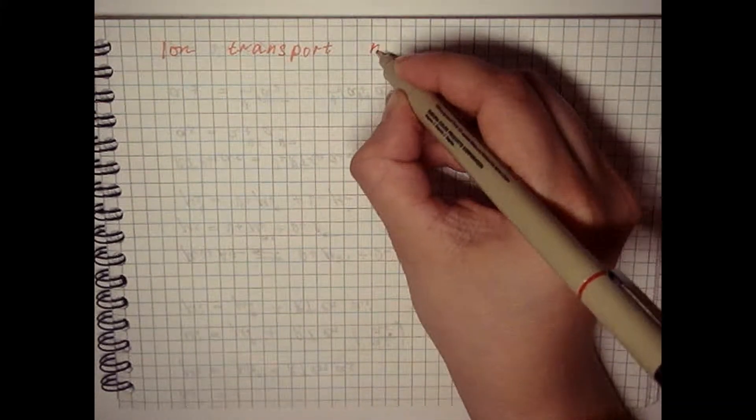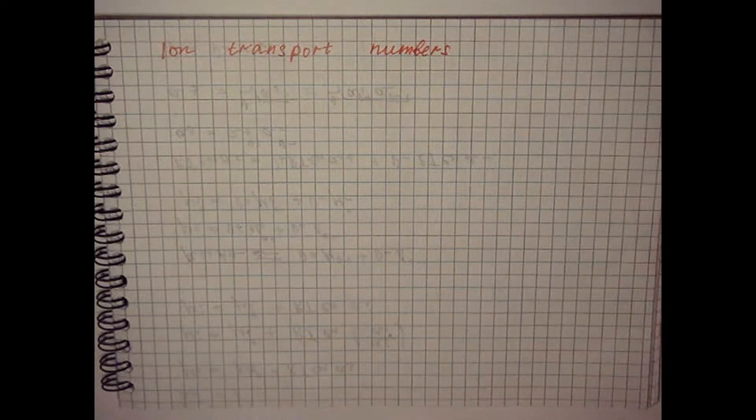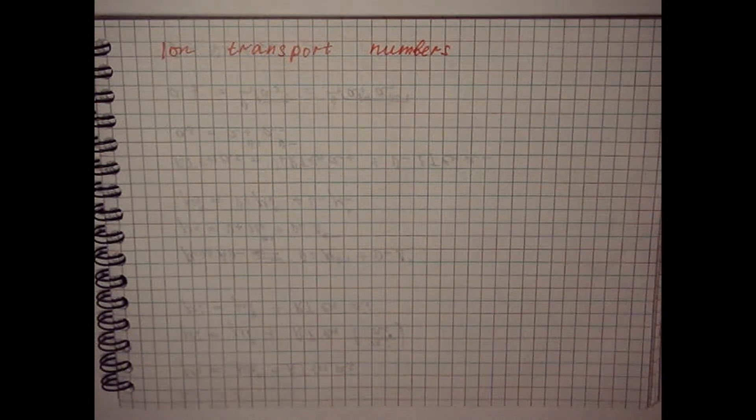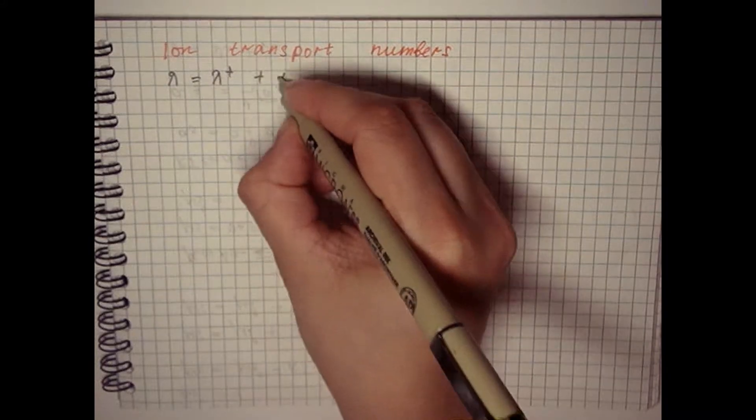According to Kohlrausch law, the equivalent electrical conductivity is determined by the sum of the electrical conductivities of the cation and anion.